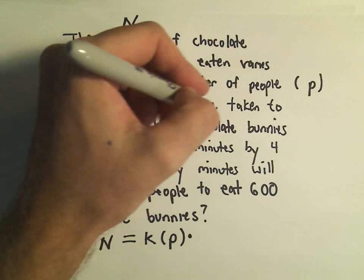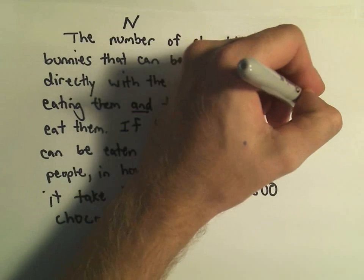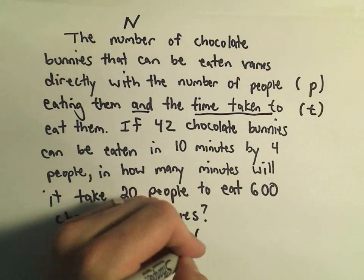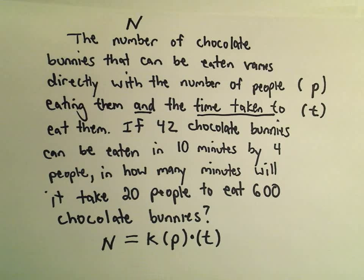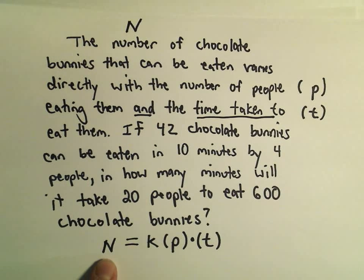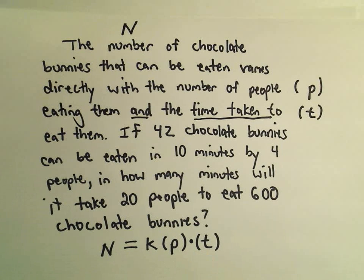And the time taken to eat them. So the time taken, we'll label that as a T. So now I've created an equation that relates the fact that it says the number of chocolate bunnies that can be eaten varies directly with the number of people and the time taken.